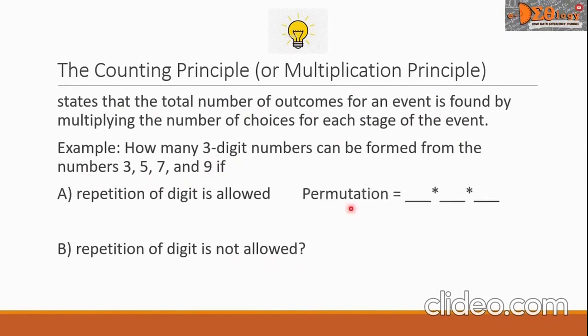Let us solve for problem A. For the permutation, let us write three blanks here to represent the three-digit numbers. Each blank here represents the number of choices for each stage. So for the first blank, there will be four choices of the digits. So in here we can write four.